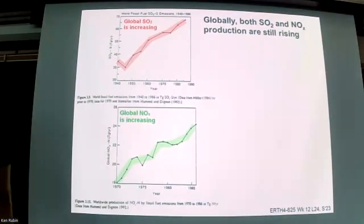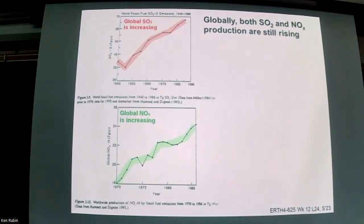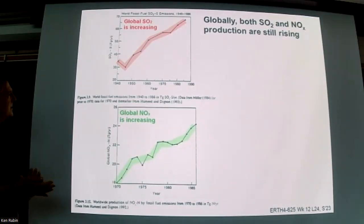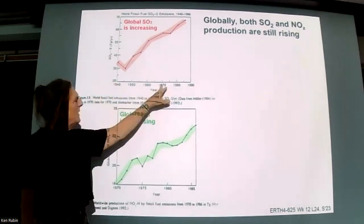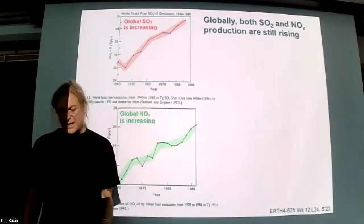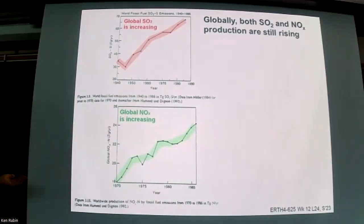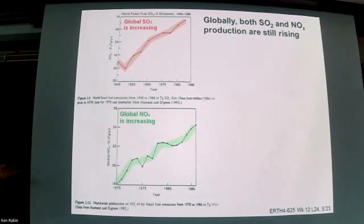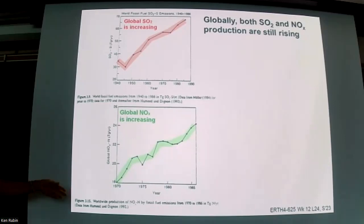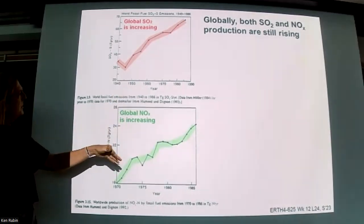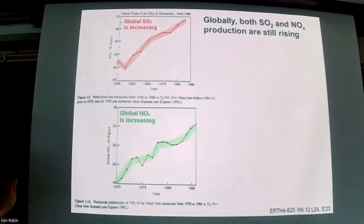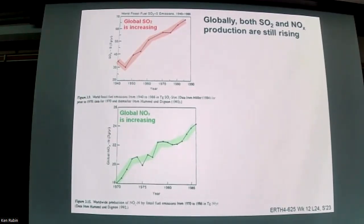Global trends show that from World War II through the late 20th century, sulfur production on the globe was rising, as was nitrogen. Whereas in the US nitrogen was increasing and sulfur decreasing from the 1950s onward, globally that wasn't the case.